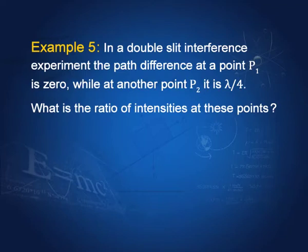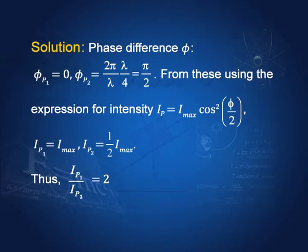Another example: in a double slit experiment, the path difference at point P1 is 0, while at another point P it is λ/4. Using Ip = Imax·cos²(φ/2) and substituting the phase corresponding to each path difference, the ratio of intensities at the two points turns out to be 2. This is a straightforward calculation.